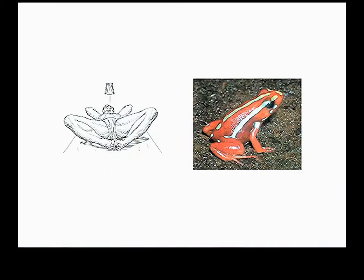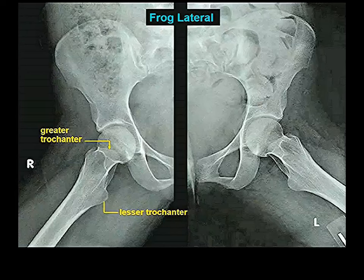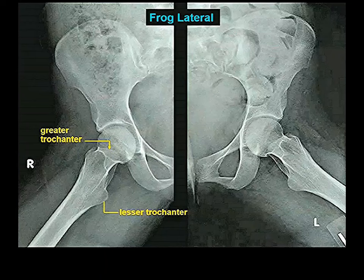Most X-rays are done AP — the person is lying down or standing up, and the film is front to back. There is also a position called the frog lateral position, where the legs are positioned to resemble a frog's legs when sitting around. This is what a frog lateral X-ray looks like. It doesn't look like a standard AP film, but I thought you should see one so you know to anticipate its existence.